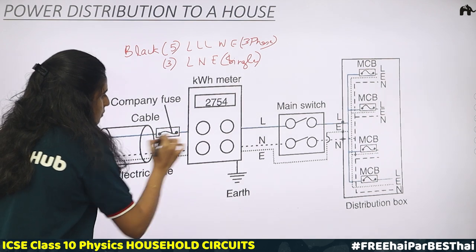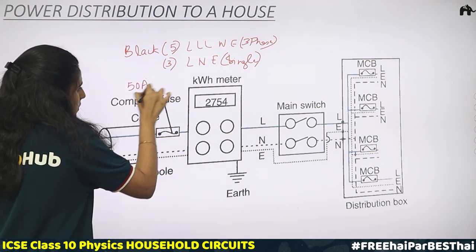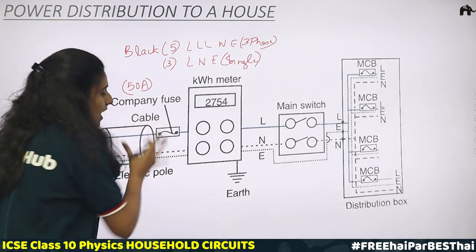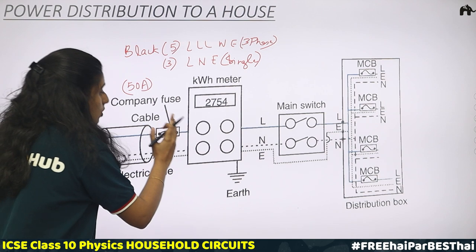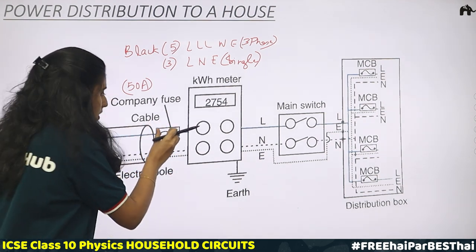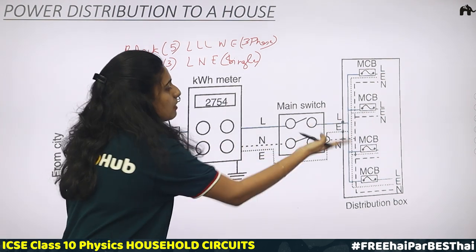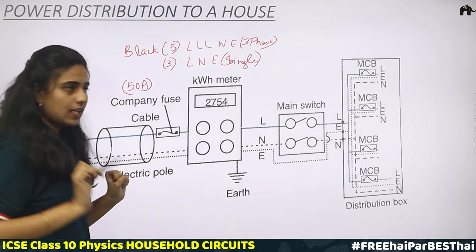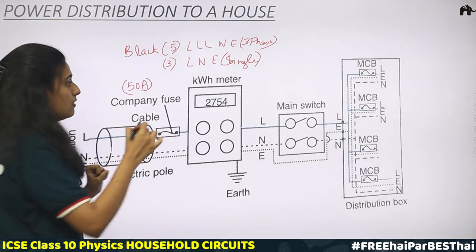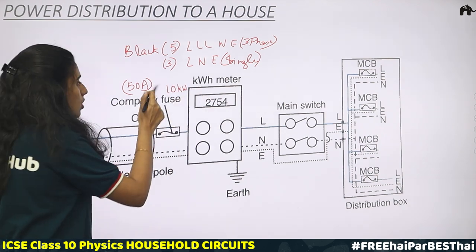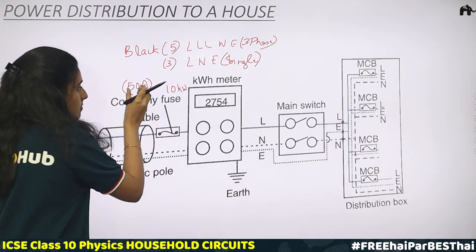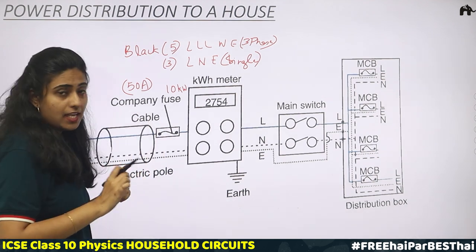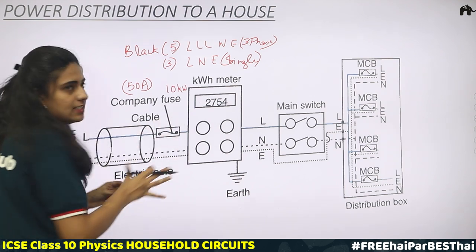The wires pass through an electric port. There is a company fuse connected to the live wire with a high rating, such as 50 amperes. If any fault occurs and more current starts to flow, the fuse wire melts and does not allow current to flow to the remaining parts — keeping everything safe. The company fuse can only be handled by personnel from the electric supply company.